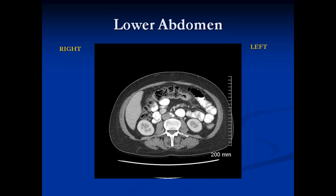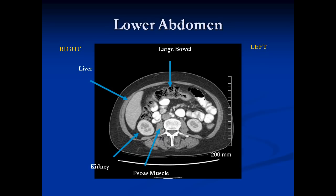Going a little further down into the abdomen, we're at the lower edge of the kidneys. We see just the tip of the liver and a little of the spleen. These structures are the lower poles of the kidneys. We see the psoas muscle on each side next to the spine — a very important structure. All these structures are outlined by black fat, which sits in the retroperitoneum and in the mesentery, allowing us to see them much more clearly. This piece of bowel with black and gray material is the transverse colon containing fecal material. Here we have the aortic bifurcation into the common iliac arteries, and right next to it the inferior vena cava.